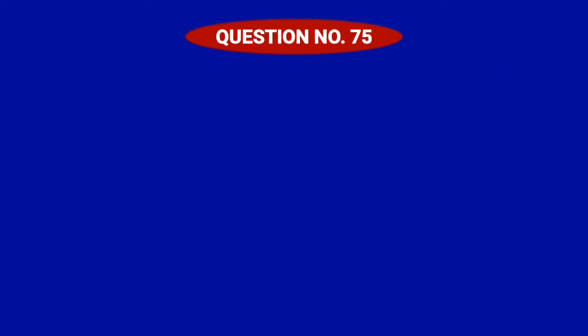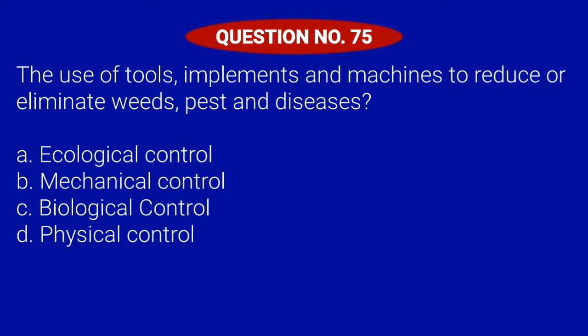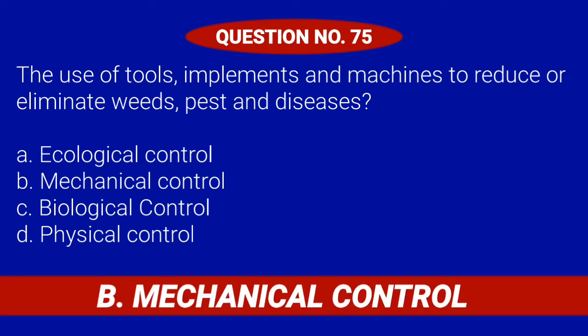Question number 75. The use of tools, implements and machines to reduce or eliminate weeds, pest and diseases. Letter A: Ecological control. Letter B: Mechanical control. Letter C: Biological control. Or Letter D: Physical control. Correct answer is Letter B: Mechanical control.